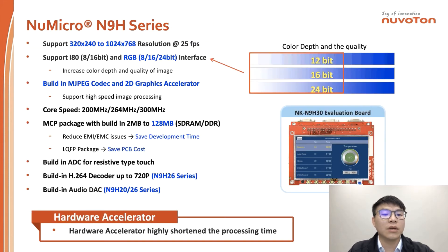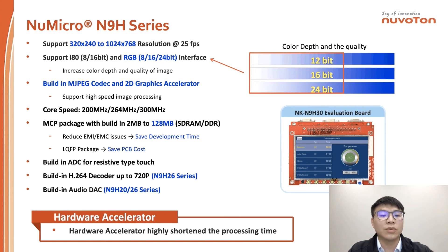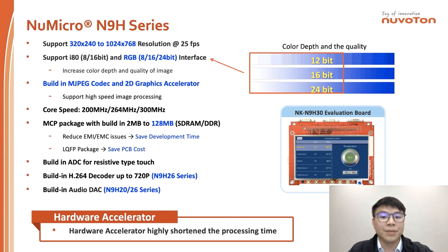The Nuvoton N9H series contains three sub-series: N9H20 at 200 MHz, N9H26 at 264 MHz, and N9H30 at 300 MHz core speed. There are three key points about the N9H series. First, it uses multi-chip package technology to build in from 2 MB to 128 MB of SDRAM, which reduces EMI effects and shortens product development time. Second, it adopts LQFP packaging instead of BGA, which reduces PCB assembly errors and saves total board cost. Third, it provides a hardware JPEG decoder and hardware 2D accelerator to increase image processing speed.